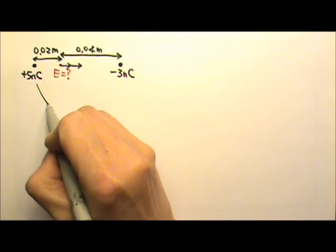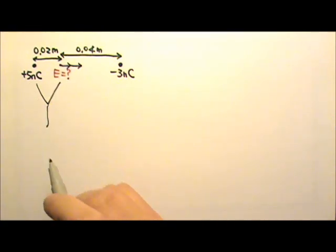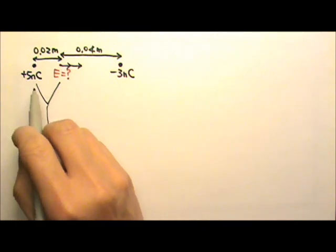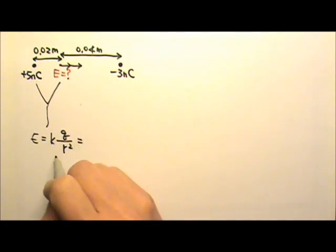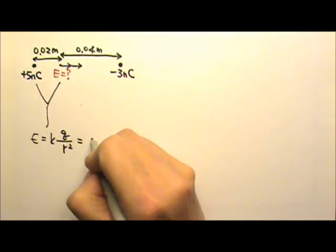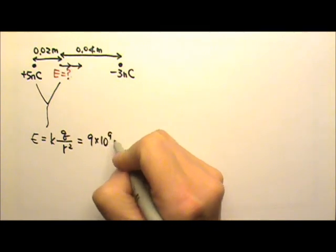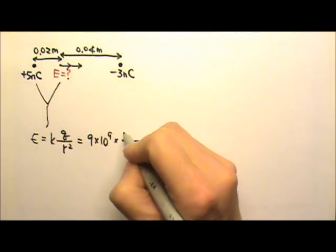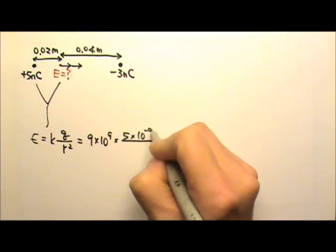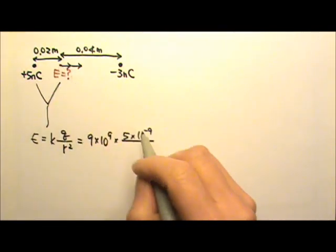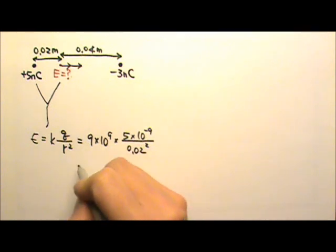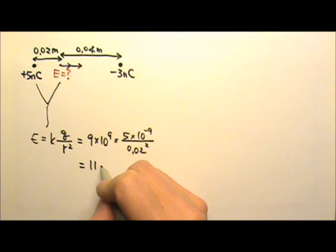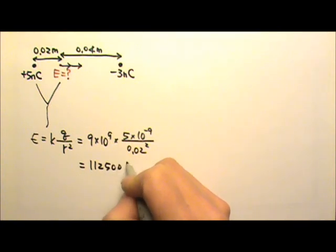Let's find the electric field produced by the positive 5 nanocoulombs. The electric field produced by a point charge can be found using KQ over R squared, also called Coulomb's law. K is 9 times 10 to the ninth, the charge is positive 5 nanocoulombs, and the distance to the location is 0.02 meters squared. This gives us an electric field of 112,500 newtons per coulomb.